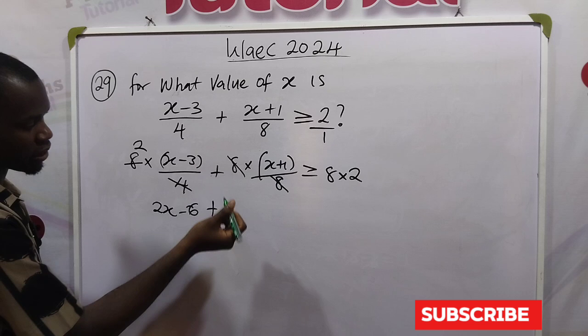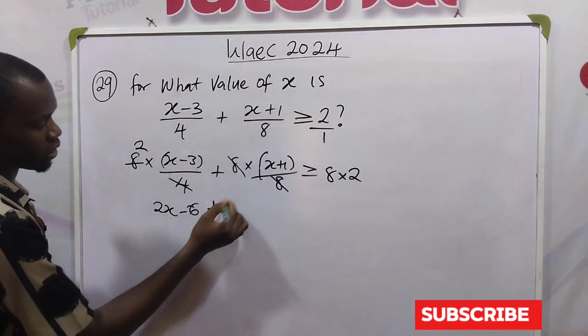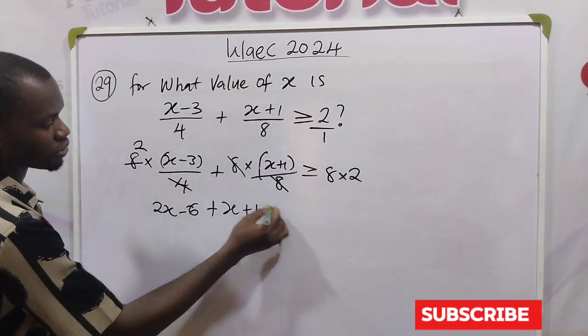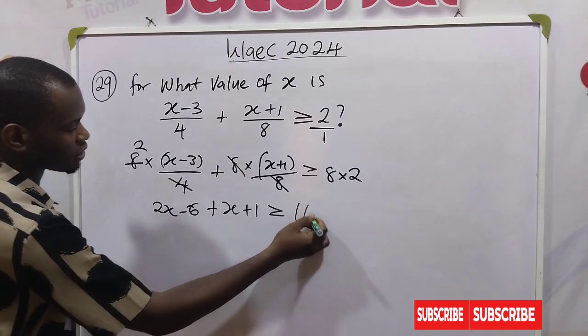Now 8 can divide 8 completely, so we have x plus 1, greater than or equal to 8 times 2, we have 16.